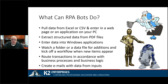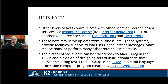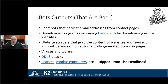Using RPA you can pull Excel or CSV data and enter it in a webpage, extract structured data from PDF files, enter data into Windows applications, watch a folder for additions and kick off a workflow, route transactions, and create emails from data. However, bots can also be used for bad purposes — that's why when you log into a website you're asked to click on pictures of traffic lights, bicycles, or cars — they're trying to keep robotic process automation bots from hacking into websites. Many sites do get attacked by bots.